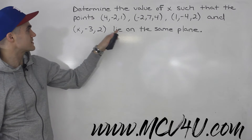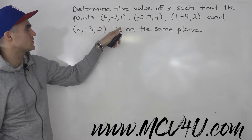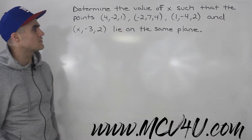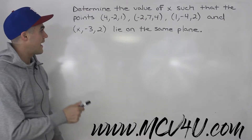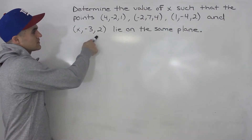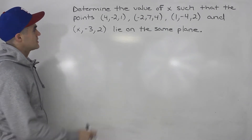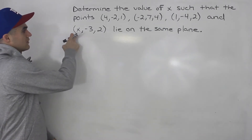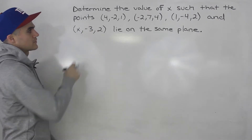We need to determine the value of x such that the points (4, -2, 1), (-2, 7, 4), (1, -4, 2), and (x, -3, 2) lie on the same plane. We're looking for this x value of this fourth point.